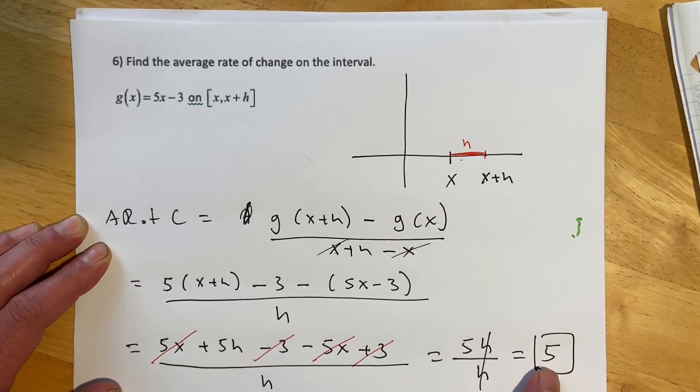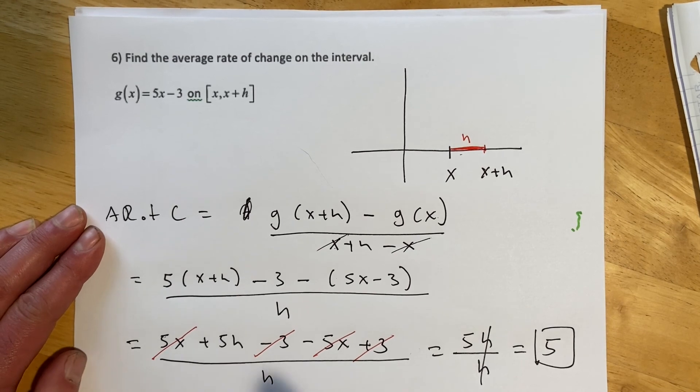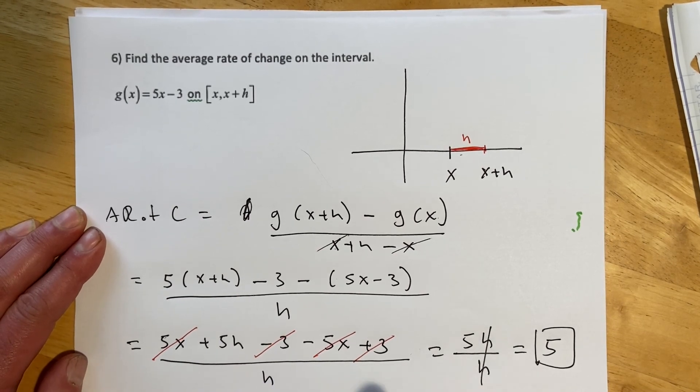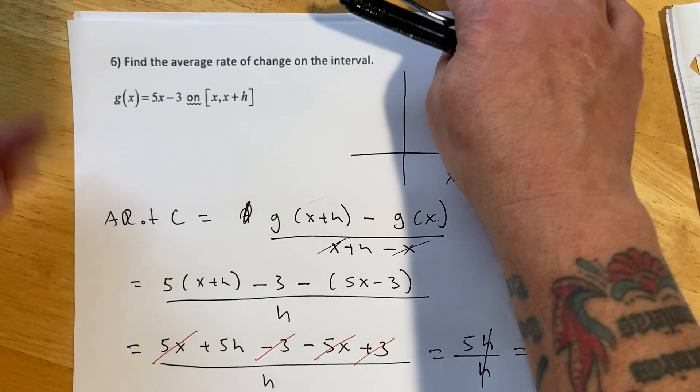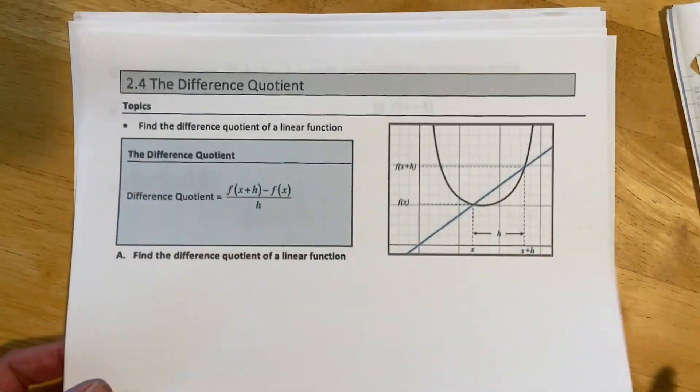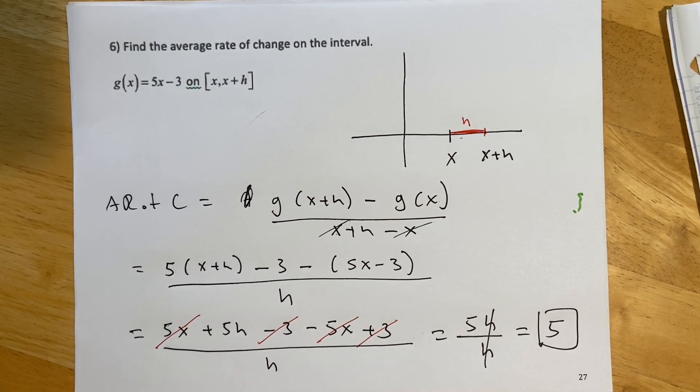Where this becomes a lot more interesting is when we get the difference quotient, which is actually the next section. It won't be that interesting there because it's still going to be a linear function. But once these are curvy functions, then this idea, this thing that we just did here, which was actually sneaking into the difference quotient, that becomes the basis for all of calc 1. So it's actually a pretty important idea.